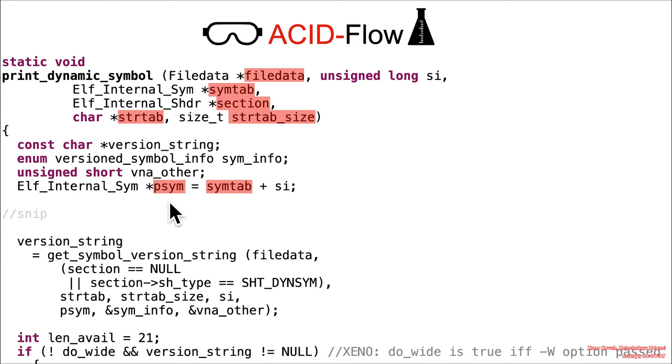The symbol table corrupts the psim, and inside of this get_symbol_version_string, we've got file data, we've got section, we've got string table, we've got string table size, we've got psim, so a whole bunch of ACID data going into there, and the output from that is the version string, which is an attacker-controlled version string that was embedded in this binary.